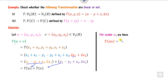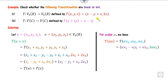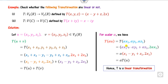Similarly, alpha of U is T of (alpha x₁, alpha y₁, alpha z₁). Substituting this value and taking alpha as common from all terms, the result is alpha times T(U). Since both properties are satisfied, this is a linear transformation.